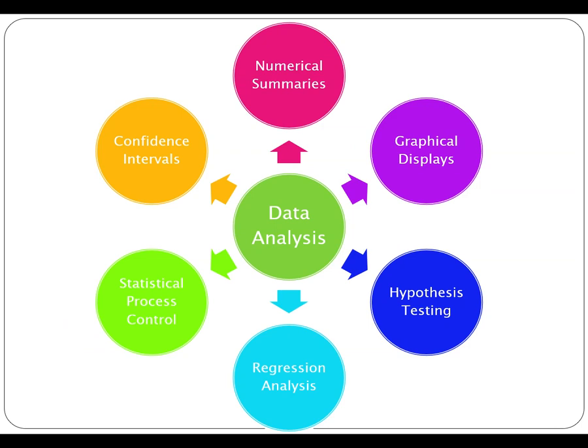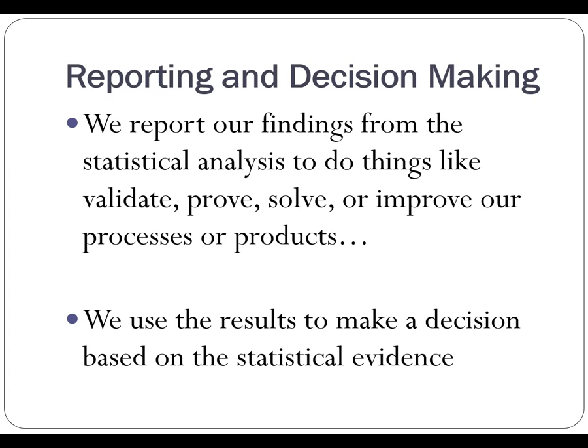After we collect the actual data, we're going to do some sort of analysis. Those could be numerical summaries, graphical displays, hypothesis testing, regression analysis, statistical process control, or confidence intervals. In this class, we're going to focus primarily on numerical summaries, graphical displays, hypothesis testing, simple linear regression, and confidence intervals. After the analysis, we usually do some sort of reporting and decision making. We want to make sure that we base our reporting and decisions on statistical evidence — not on one individual, but on our random selection of individuals and what the analysis is telling us.